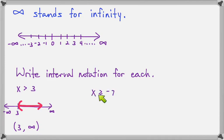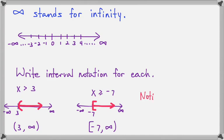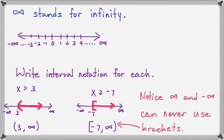Now let's do x is greater than or equal to negative 7. Looking at the graph, the interval notation starts at negative 7, so I put bracket negative 7, and it goes toward infinity, so I put comma infinity. This interval is just a way of describing what numbers are being shaded in the picture — negative 7 is where it starts being shaded, and infinity is where the shading ends.